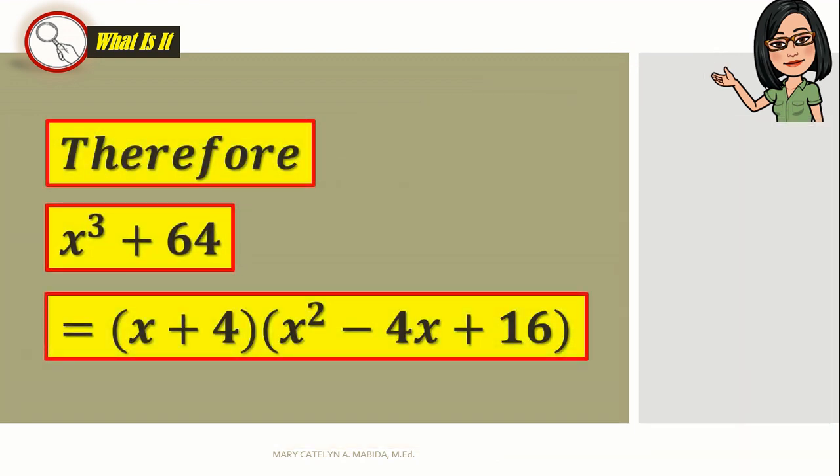Therefore, x cubed plus 64 is equal to the quantity of x plus 4 times the quantity of x squared minus 4x plus 16.